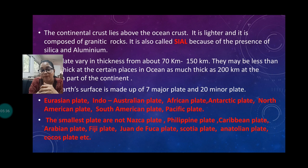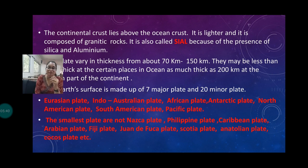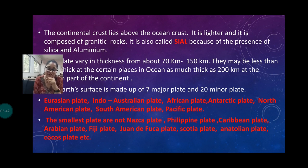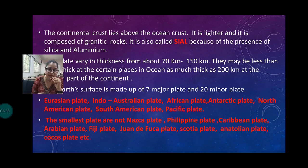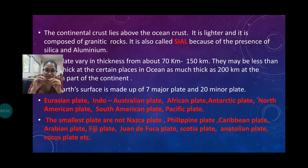The surface of the earth is made up of seven major plates. There are several plates — some small, some big. Seven plates are mainly the big plates and 20 plates are the small plates.